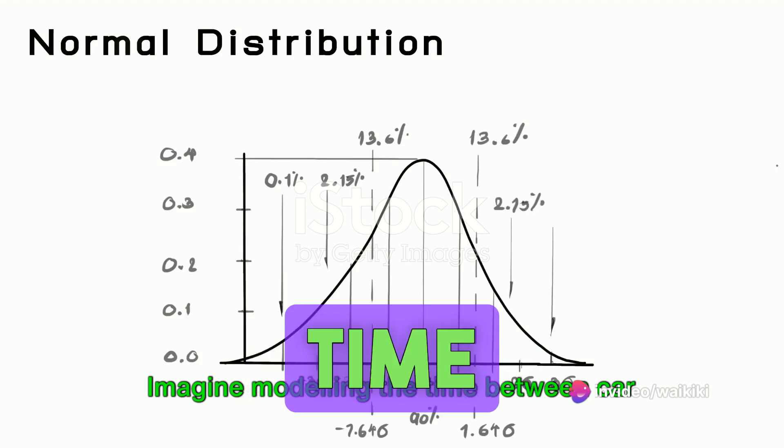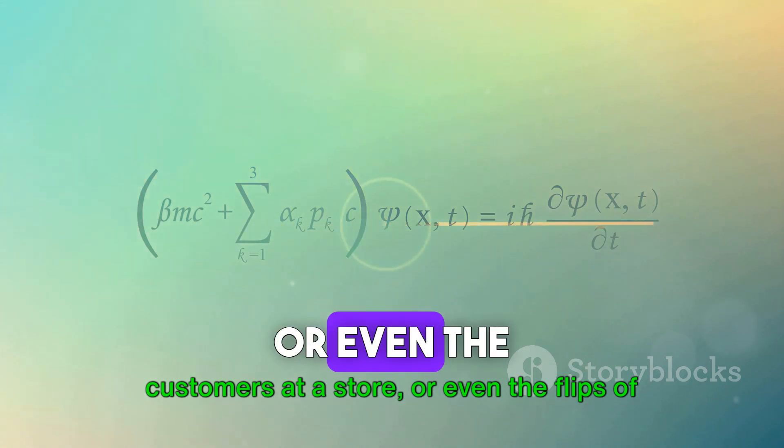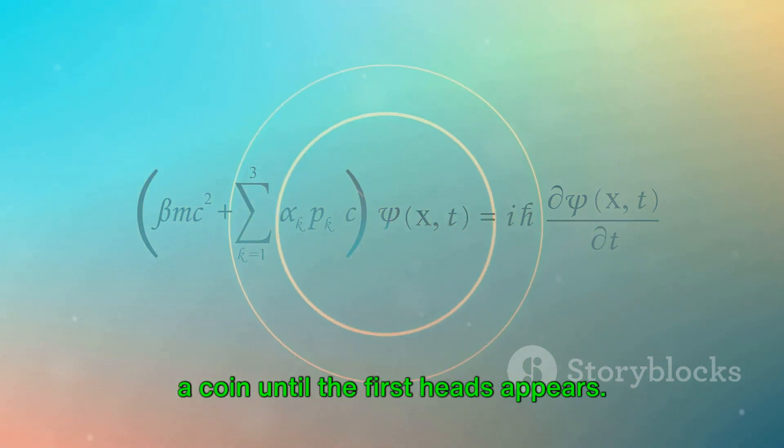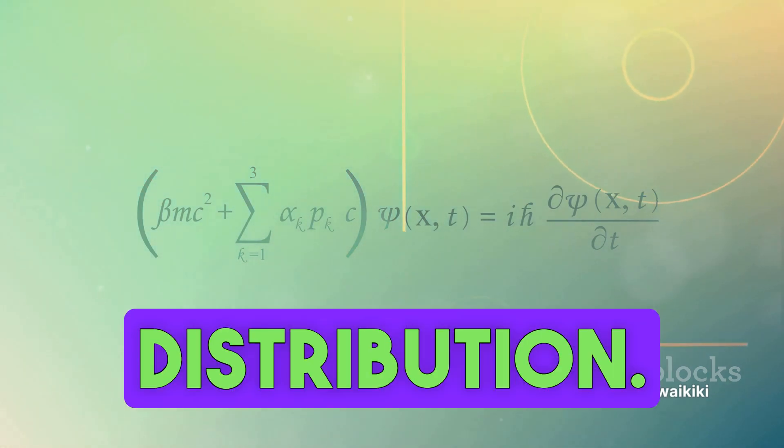Imagine modeling the time between car accidents on a highway, arrivals of customers at a store, or even the flips of a coin until the first heads appears. All these scenarios can be represented by the exponential distribution.